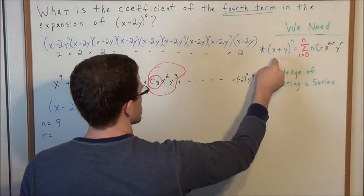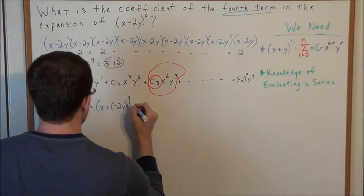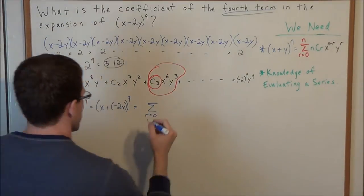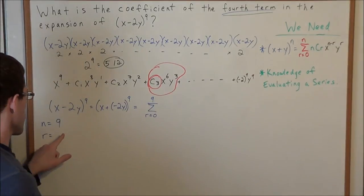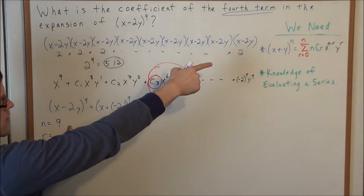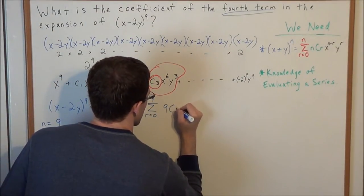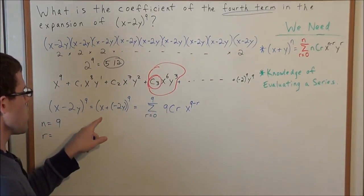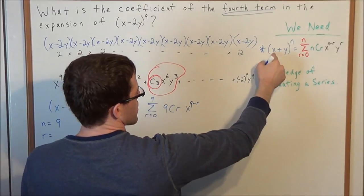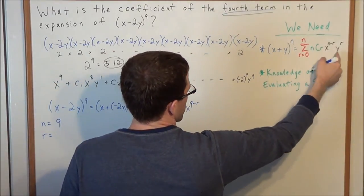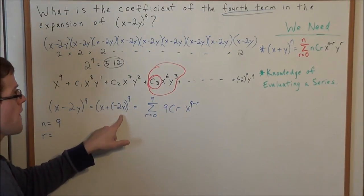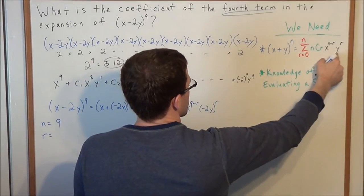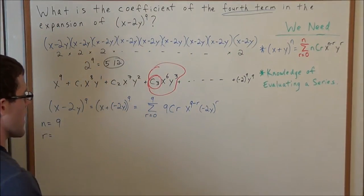Let's write this in series form. We're looking at the summation from r equals zero to n, but n equals nine, of 9Cr times x to the 9 minus r. Now we need to be careful here: we have an x in the theorem, so we write x here. But in this example we don't have a plain y — we have negative 2y. So for the second piece, we write negative 2y to the r. We're substituting negative 2y for y.